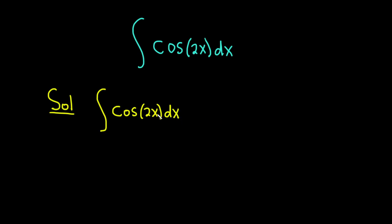So to do this problem we want to make it look like cosine of x because we can integrate that. So what we will do is we'll make a substitution. We're going to let u be equal to 2x.